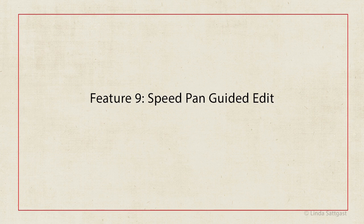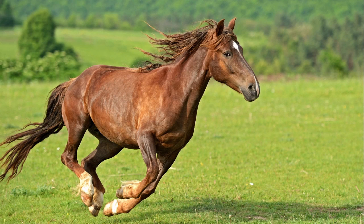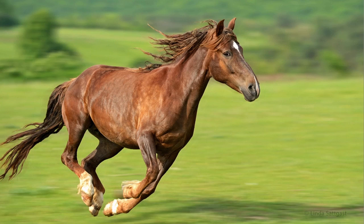Number nine is Speed Pan, a guided edit that adds a motion blur behind your subject to create a dramatic stop motion effect. Here's the original photo of a horse, and here it is after using the guided edit Speed Pan. This isn't something you would use all the time, but for the right photo it adds a very nice touch.